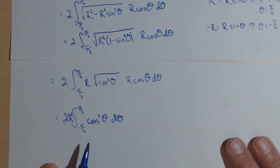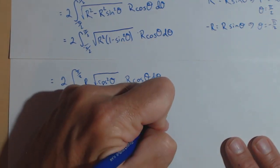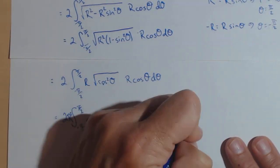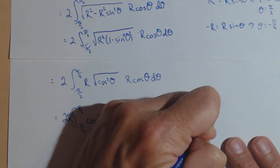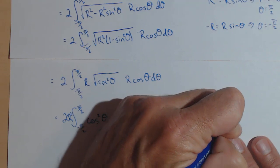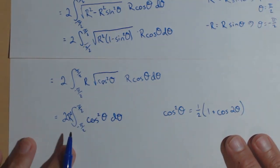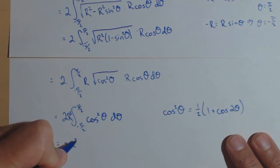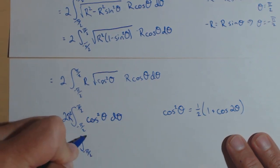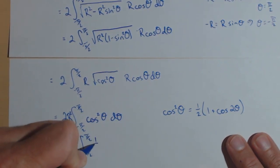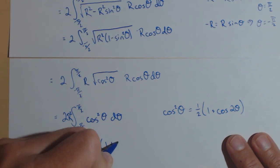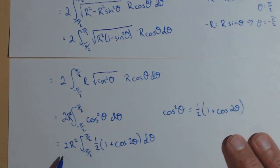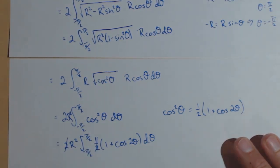One way to solve this is with a table of integrals, but I'll use the half-angle identity: cosine squared theta equals one-half times (1 plus cosine of 2 theta). Making that substitution, we get 2r squared times the integral from negative pi over 2 to pi over 2 of one-half times (1 plus cosine of 2 theta) d theta. Notice the 2 and the one-half cancel, so we don't need to worry about that factor.